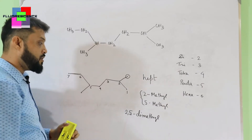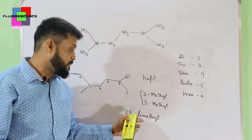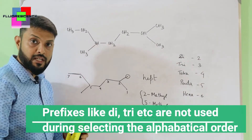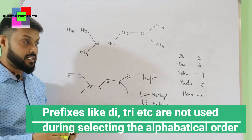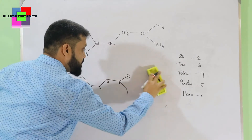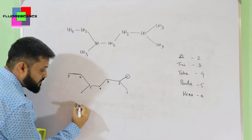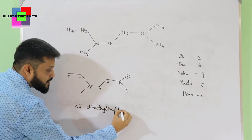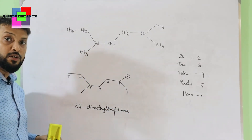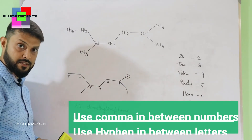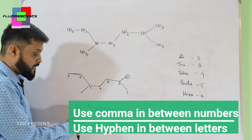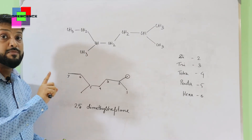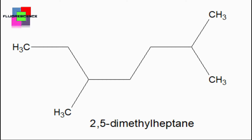Be careful: when adding prefixes like di, tri, tetra, etc., we do not use them for alphabetical ordering in nomenclature — we use the 'M' of methyl for ordering, but not the 'D' of di. So the compound name is 2,5-dimethylheptane. When writing this, ensure there is no space in between. Always use commas between two numbers, and hyphens between a number and a letter. The final name is 2,5-dimethylheptane.